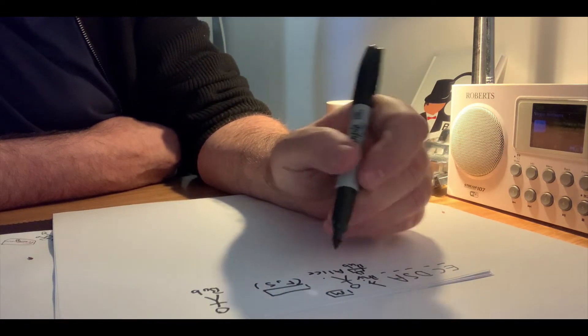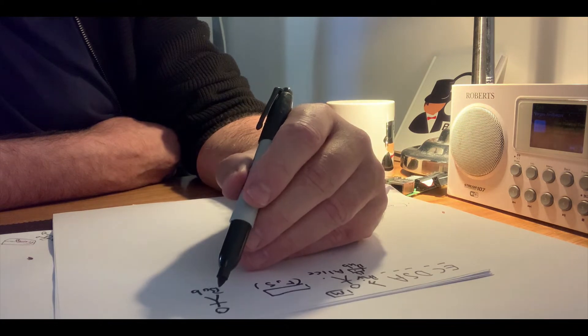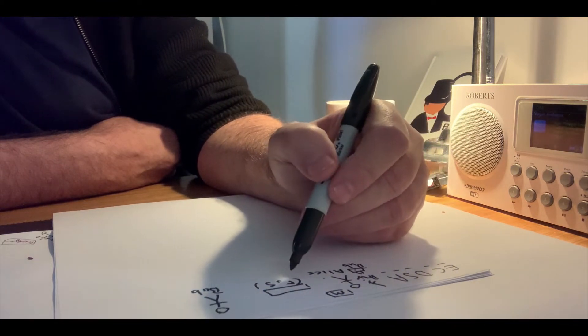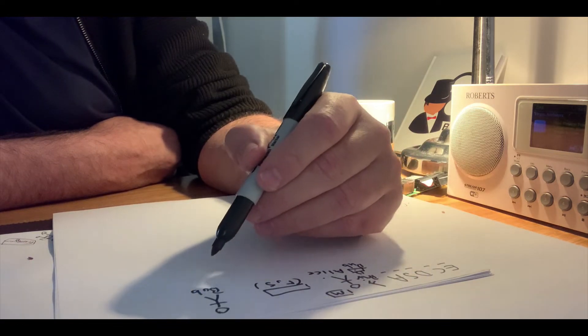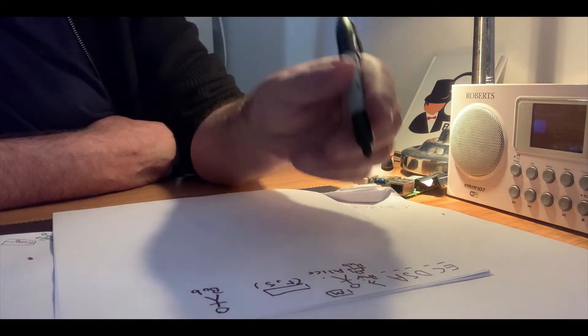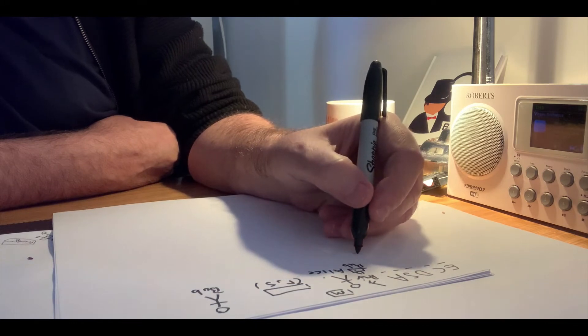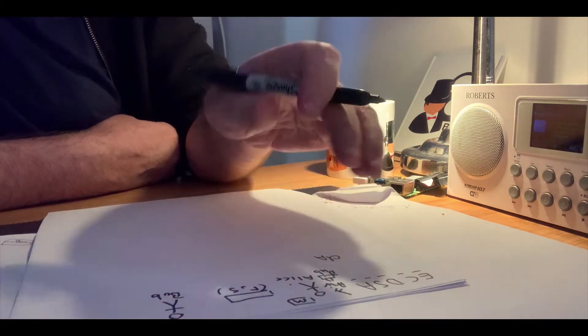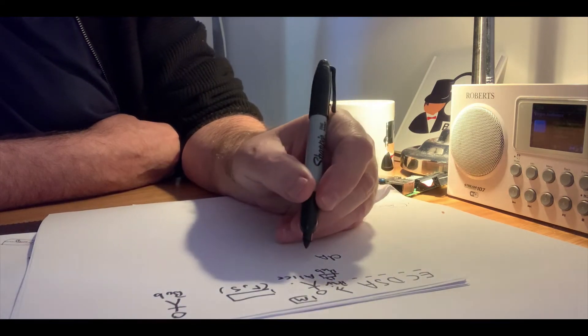She will send Bob her public key and sign the message with her private key so that Bob can actually prove that it was Alice that sent the message. So let's say that Alice has a private key of da.